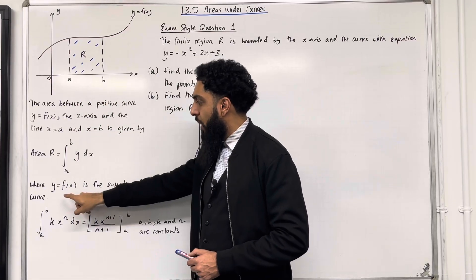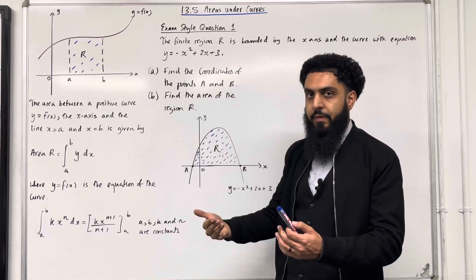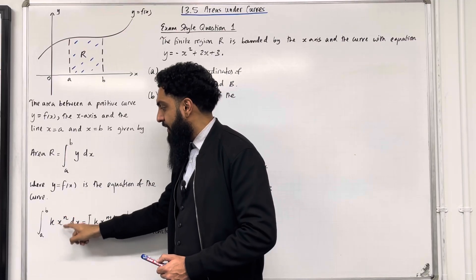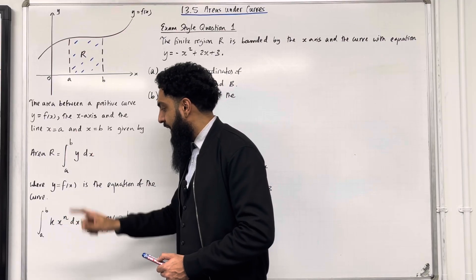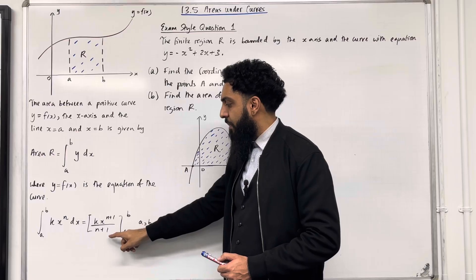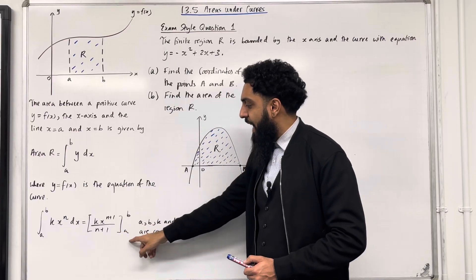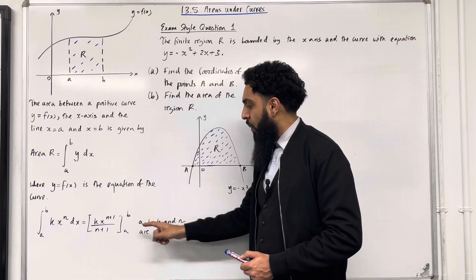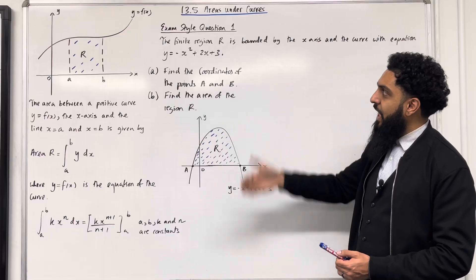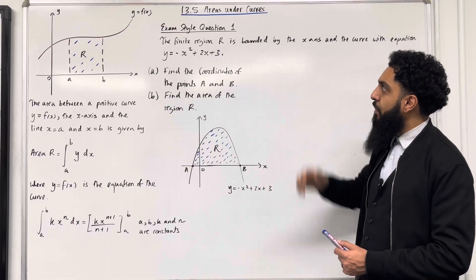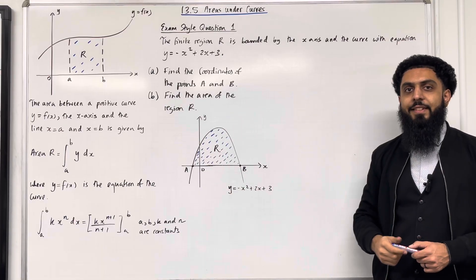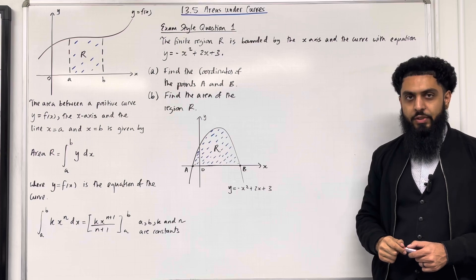y = f(x) is the equation of the curve. We know that the integral from a to b of kx to the power n dx is given by kx to the power n+1 divided by n+1, taking limits a to b, where a, b, k, and n are constants. These are the key facts of 13.5 Areas Under Curves. I'll be implementing these key facts within two exam-style questions.